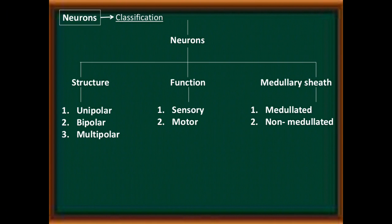Classification of neurons: on the basis of structure, function, and medullary sheath. On the basis of structure, there are three types: unipolar, bipolar, and multipolar. On the basis of function: sensory and motor neurons. On the basis of presence or absence of medullary sheath: myelinated and non-myelinated neurons.